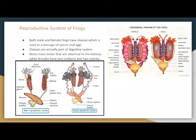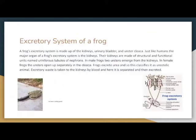The reproductive systems of frogs. Both male and female frogs have cloacas, which are used as a passage for sperm and eggs, and usually these cloacas are actually part of the digestive system. Males have testes that are attached to the kidneys, while females have two oviducts and two ovaries.